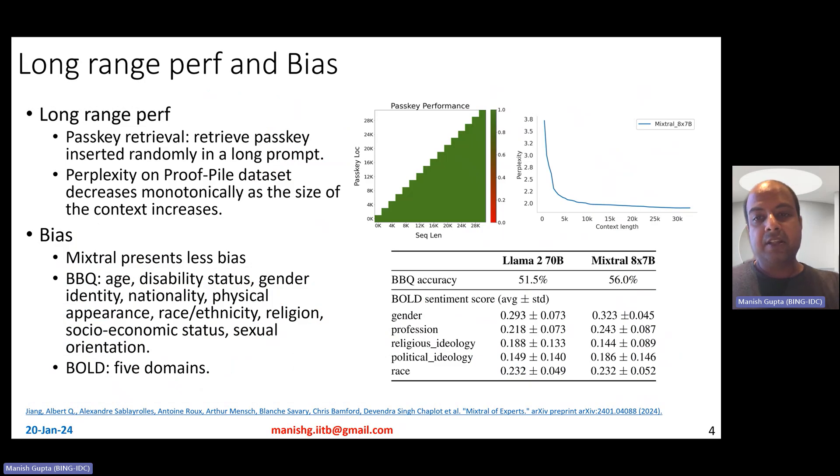So how does Mixtral perform on long-range kind of inputs, very large inputs? So essentially, to measure this long-range performance, a popular task is this passkey retrieval task. So what is passkey retrieval? You basically take a very long sentence or a very long prompt and essentially synthetically generate these passkey kind of data sets where you insert a passkey randomly. And the LLM's task is to actually retrieve where is the passkey.